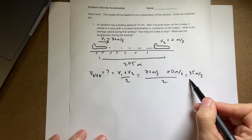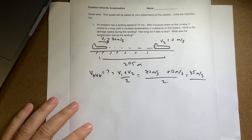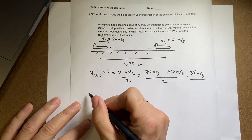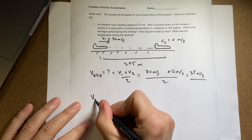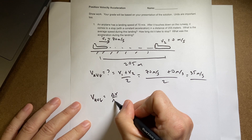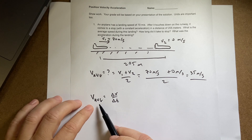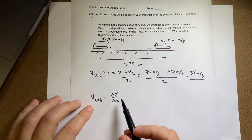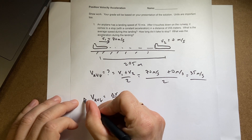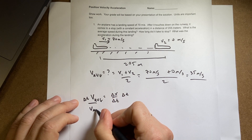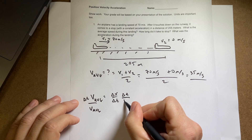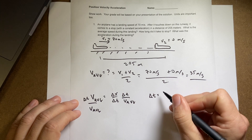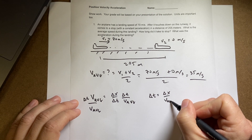I didn't even need to use my calculator for that. The second question asks how long it takes to stop. I can use the other definition for average velocity: V average equals delta x over delta t. I know V average — I just calculated that — and I know delta x is 205. So multiplying both sides by delta t and dividing by V average gives delta t equals delta x over V average.